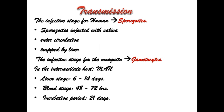The infective stage for humans is sporozoites, which are injected with saliva and enter circulation to be trapped by the liver. The infective stage for the mosquito is gametocytes. In the intermediate host, the lifespan of the parasite in the liver is 6 to 14 days, in the blood it is 48 to 72 hours, and the incubation period is 21 days.